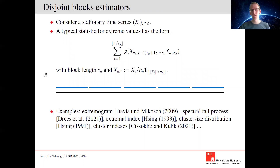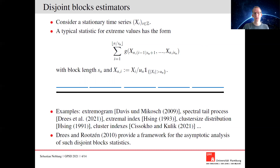There are many examples for such statistics, for example for the extremogram, the spectral tail, the extremal index, or cluster indices. The nice thing about such disjoint block estimators is we understand them quite well, since in the paper of Holger Drees and Holger Rootzén in 2010 there is a general framework for the asymptotic analysis of disjoint block extreme value statistics.